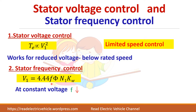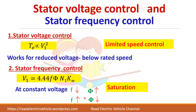If I decrease frequency, flux will increase so that voltage remains constant, but if flux increases it leads to saturation. If I increase the frequency, flux will decrease, and if flux decreases, torque will decrease — since torque and flux are directly proportional, maximum torque also decreases. This is the drawback of stator frequency control.